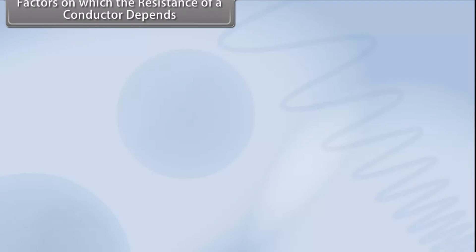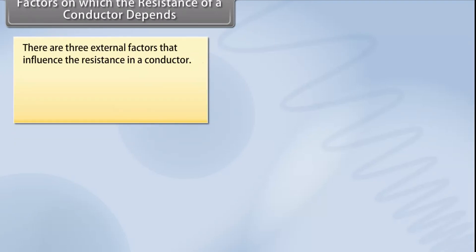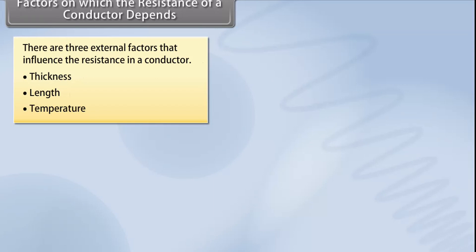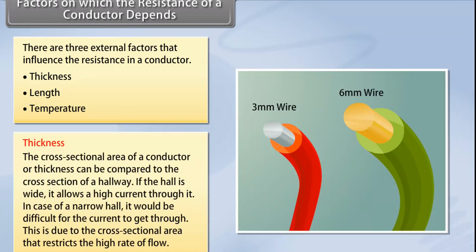There are three external factors that influence the resistance in a conductor: thickness, length, and temperature. There is also a fourth factor — the conductivity of the material — which is considered an internal factor. Thickness: the cross-sectional area of a conductor can be compared to the cross section of a hallway. If the hall is wide, it allows a high current through it. In case of a narrow hall, it would be difficult for the current to get through, due to the cross-sectional area restricting the high rate of flow.